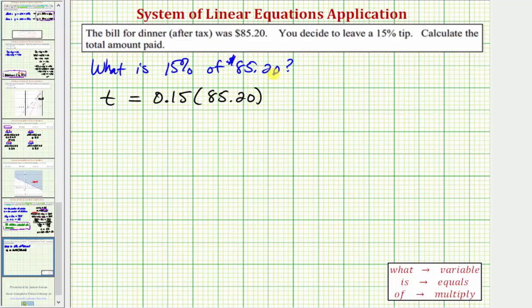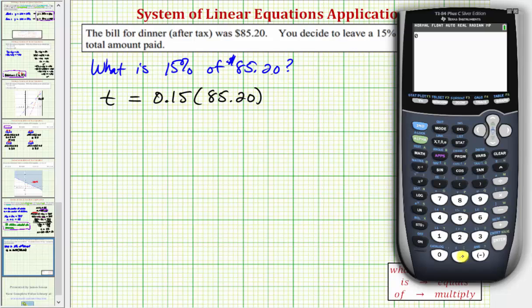So notice how to find the percent of a number, we convert the percent to a decimal and multiply. So now going to our calculator, 0.15 times 85.2,